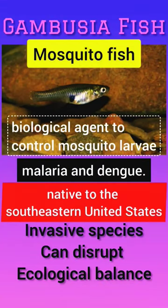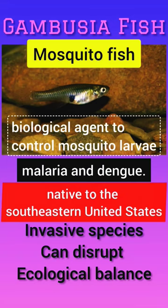The gambusia fish has been in the news from the past few days. It is also known as mosquito fish. The Andhra Pradesh government has used the gambusia fish as a natural biological agent to control the mosquito larva, which is a causative agent of malaria and dengue diseases. Since it feeds on the zooplankton and the mosquito larva, the production of mosquitoes is indirectly reduced by using the gambusia fish, which indirectly reduces the possibilities of malaria and dengue disease.